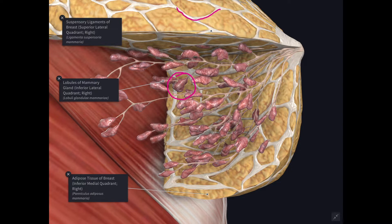Then you have the interlobar fatty tissue. These yellow color things are fatty tissue — interlobar fatty tissue — which makes the organ rounded in contour. Fat is however absent beneath the areola and the nipple.